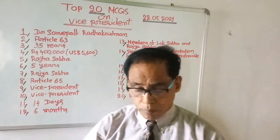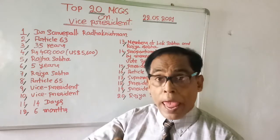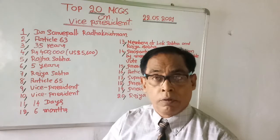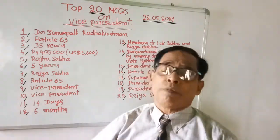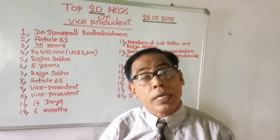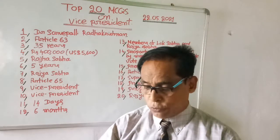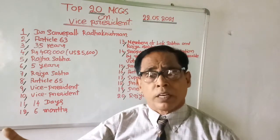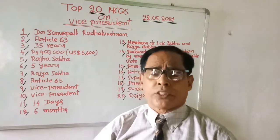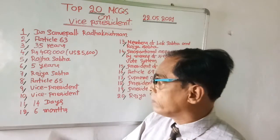Question number twelve: Before the end of the term of the Vice President, an election must be held within how many months? Choices are five months, six months, four months, and three months. The right answer is six months.